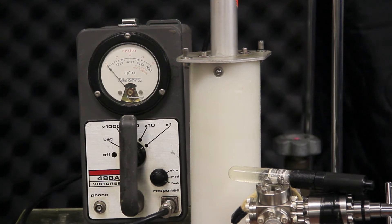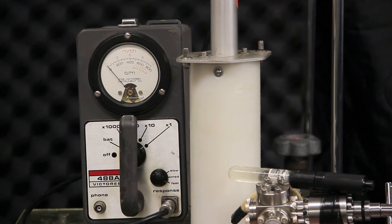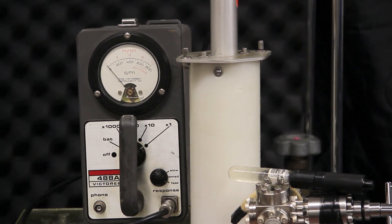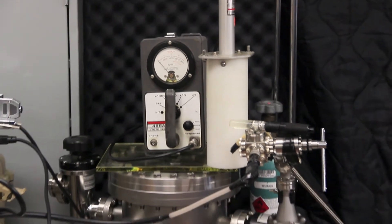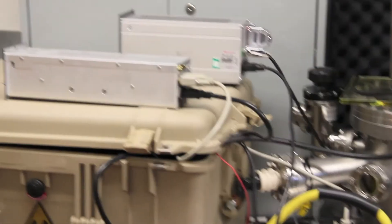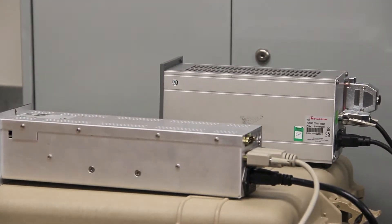You can see the Victorine every once in a while picking up a background neutron and doing a little twitch right there. So I'll go over the rest of the hardware.